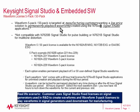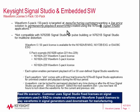Waveform licensing is targeted at manufacturing customers wanting a low-price solution to permanently play back waveforms created using the N7600B Signal Studio applications. The N7600B Signal Studio applications contain many different model numbers in the B series, ranging from GSM, CDMA, LTE, WiMAX, and digital video broadcast signal studios. You can use any of those with these waveform licenses.